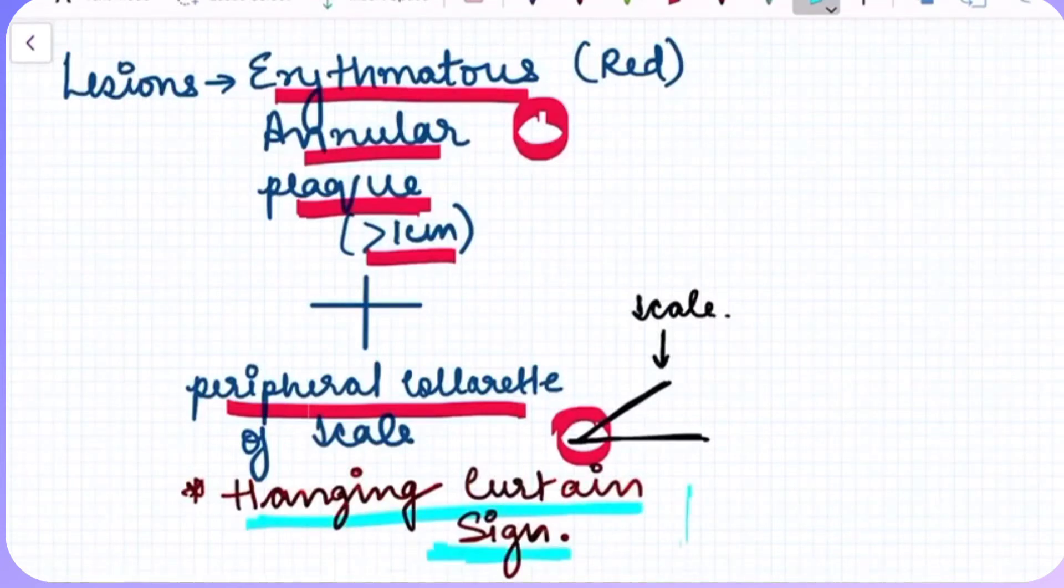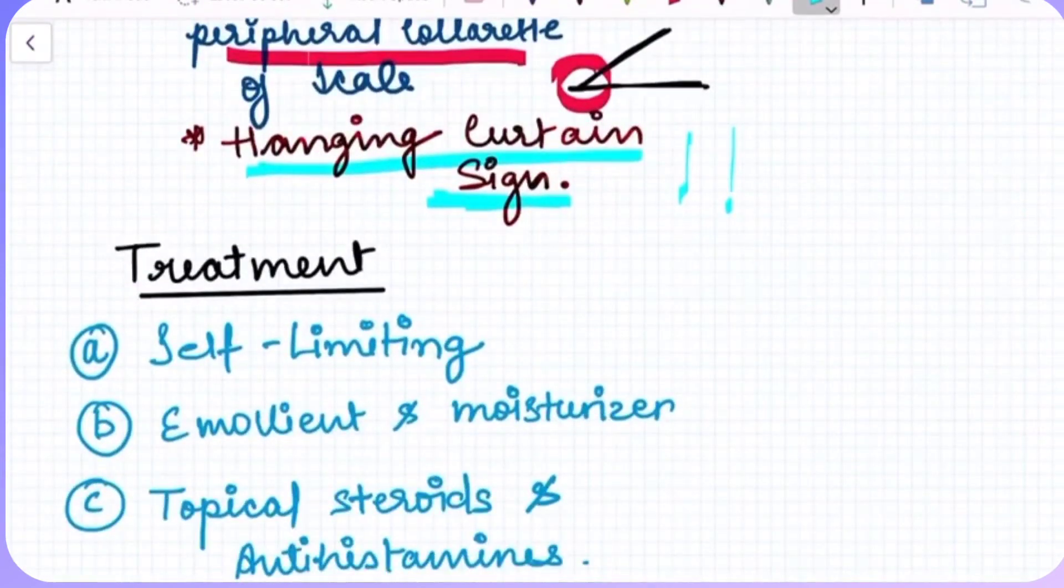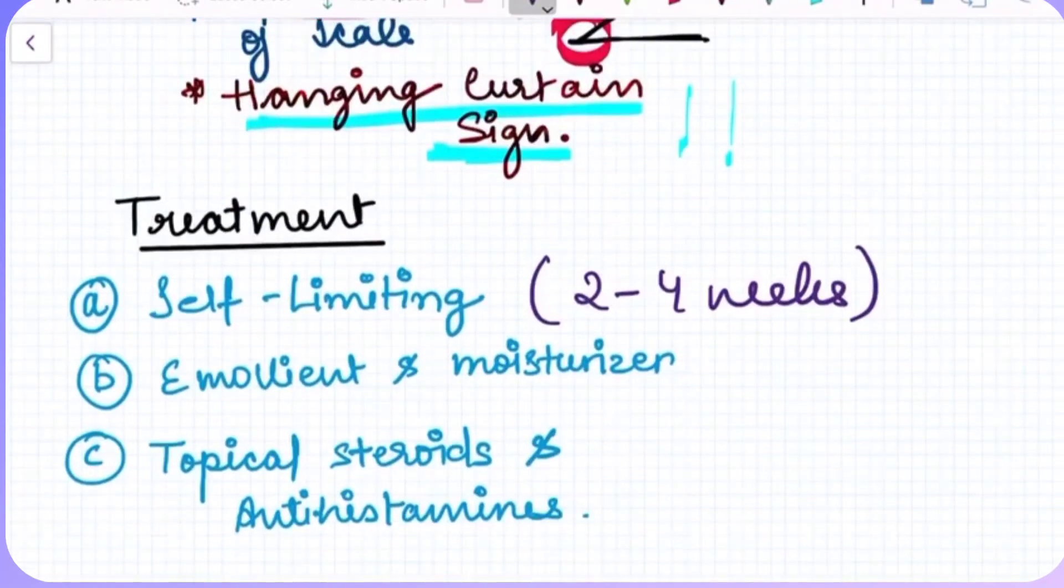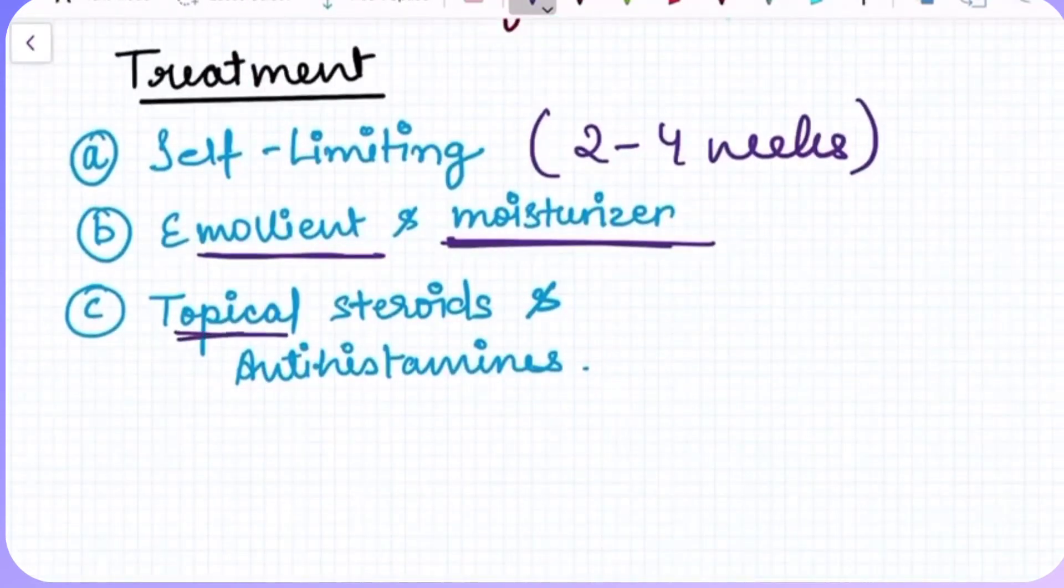Coming to the treatment of this condition, we know it is self-limiting, so it will disappear within two to four weeks. If it is a mild to moderate condition, we can use emollients and moisturizer, and if it is a very severe condition, we can use topical steroids and antihistamines.